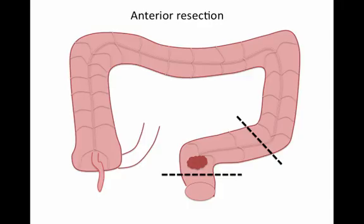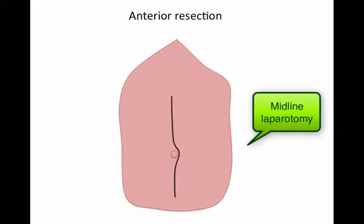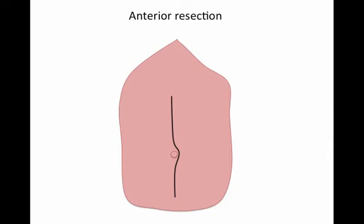Anterior resection is an operation usually performed for malignancy in the elective setting. The cancer is affecting the upper end of the rectum — lower down than those affecting the left hemicolon or sigmoid colon. The proximal and distal divisions are made within the colon, and you have enough of a rectal stump left distal to the cut beyond the cancer so that you can make a safe primary anastomosis joining these bits of bowel back together. Evidence on the patient's abdomen is a well-healed midline laparotomy scar, unless it's been performed laparoscopically, which is more common these days.